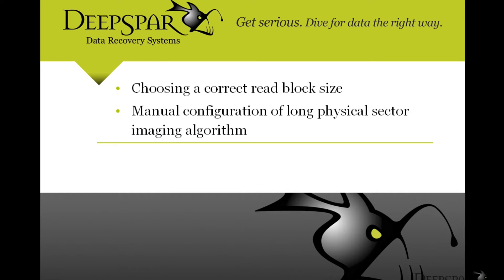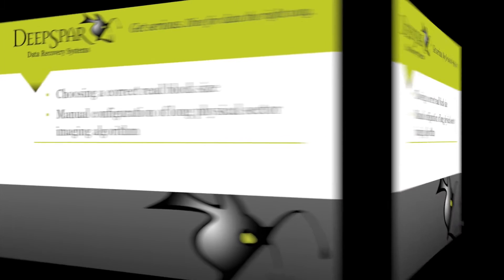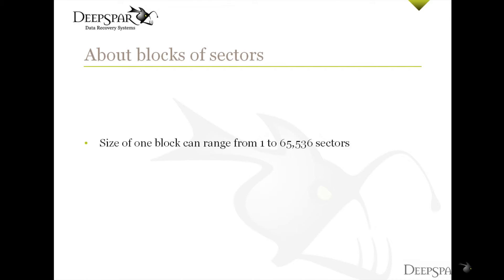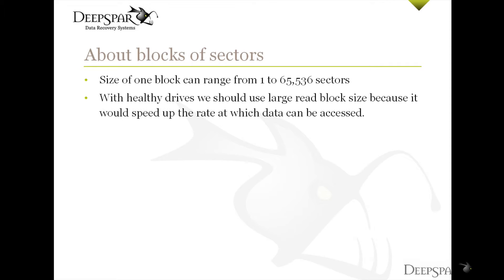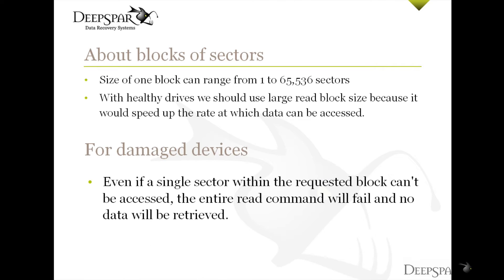According to ATA specification, data must be requested from hard drives in blocks of sectors. The size of one block can range anywhere from one sector to 65,536 sectors. When dealing with healthy devices, we would normally want to use a large read block size because it speeds up the rate at which data can be accessed. However, everything changes when working with damaged devices — if even a single sector within the requested block can't be accessed by the drive for any reason, then the entire read command will fail and no data will be retrieved.